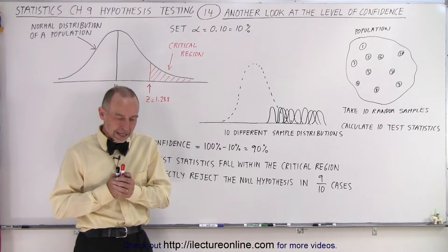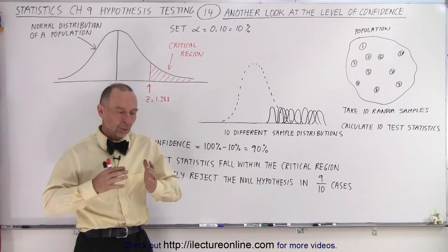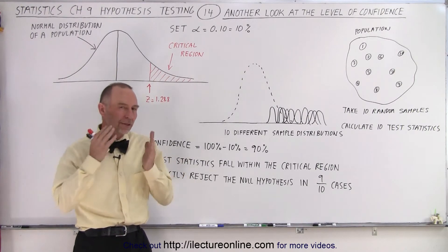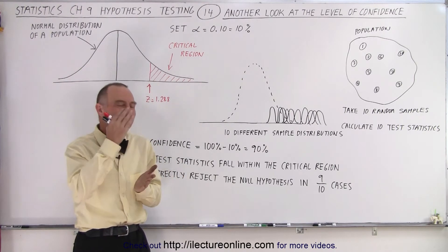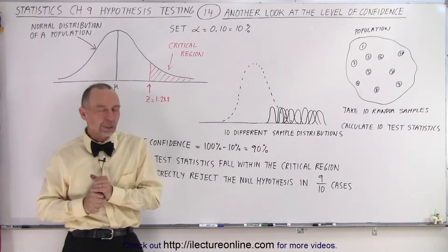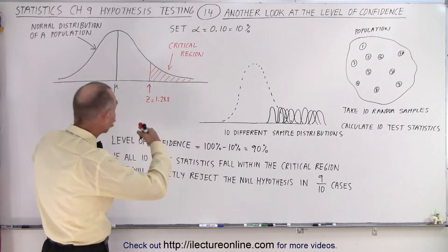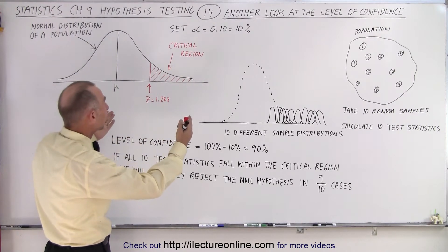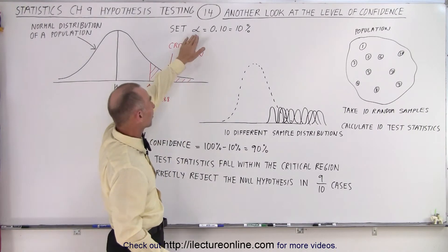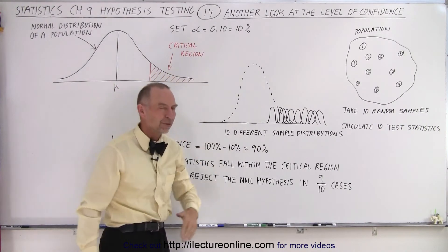So, if we do a test, we take a random sample. The test statistic falls within the critical region, and that critical region, the size of it, is defined by the level of significance. Let's say we set the level of significance at .10, which is 10%.